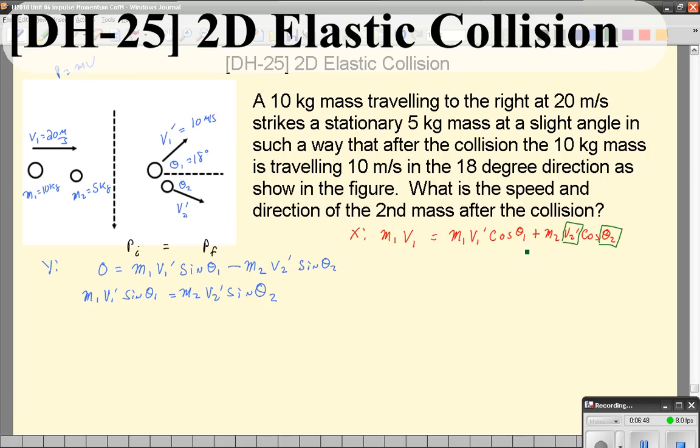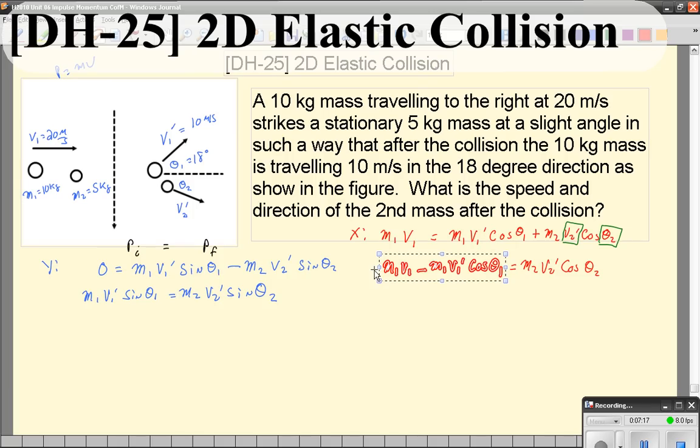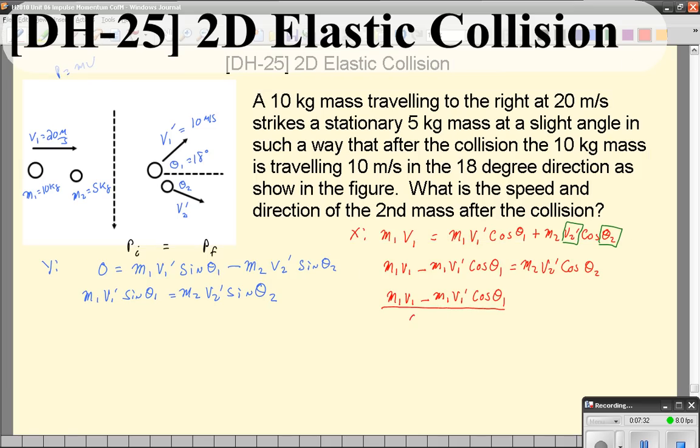Let's bring this over and solve for v2 prime. So m1 v1 minus m1 v1 prime cosine theta one is going to equal m2 v2 prime cosine theta two. And then what I want to do is divide by m2 cosine theta two so I get this by itself. I'm going to divide by m2 cosine theta two, and that's going to equal v2 prime.